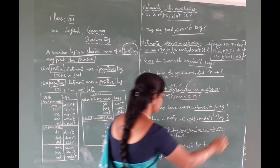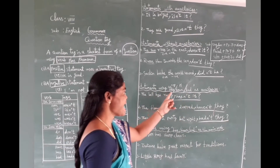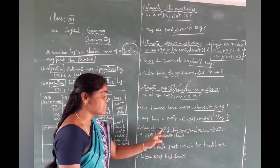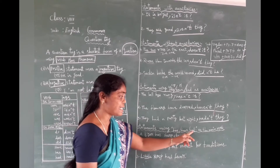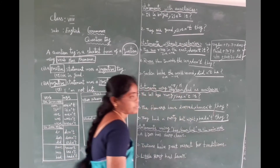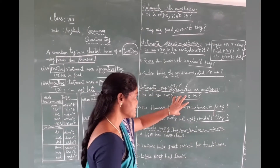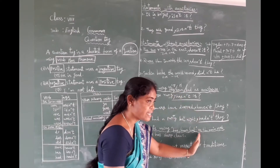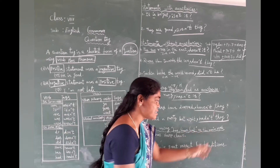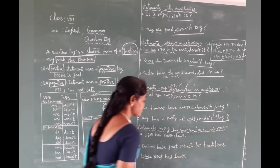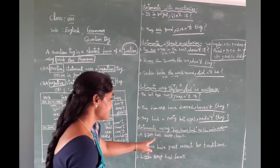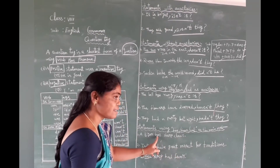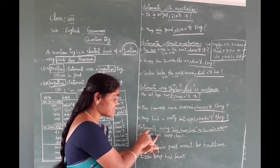So far we have seen 'has', 'have', and 'had' as auxiliaries. Now we come to statements where 'has', 'have', and 'had' play the role of the main verb. Example: 'A tiger has sharp claws.' Here there is no separate auxiliary — 'has' itself plays as the main verb. The subject 'a tiger' is singular.